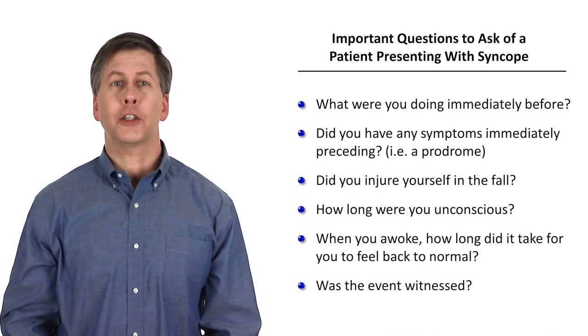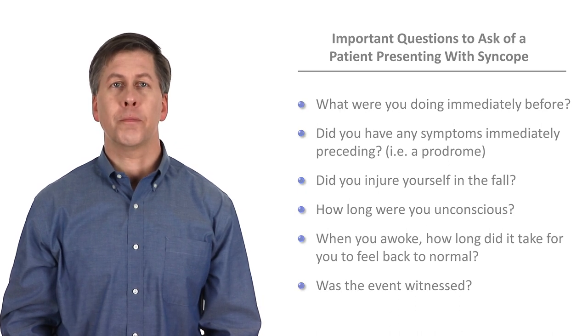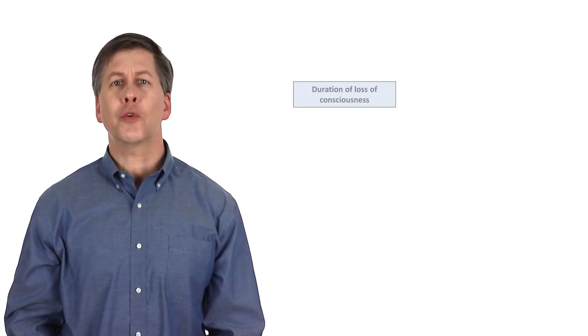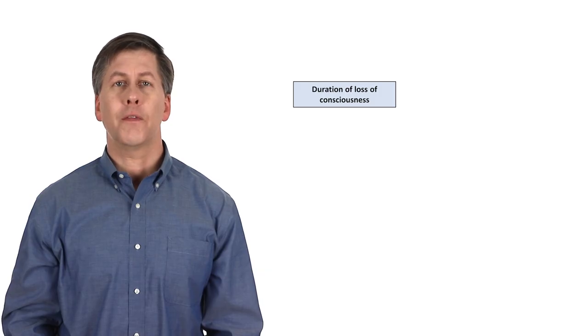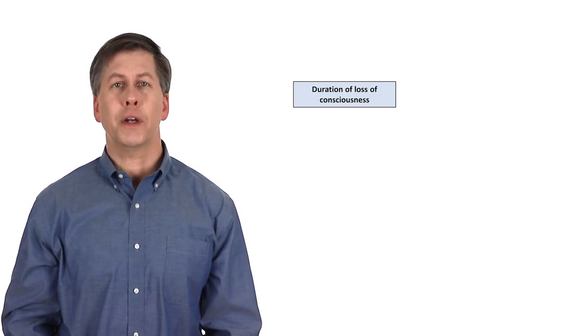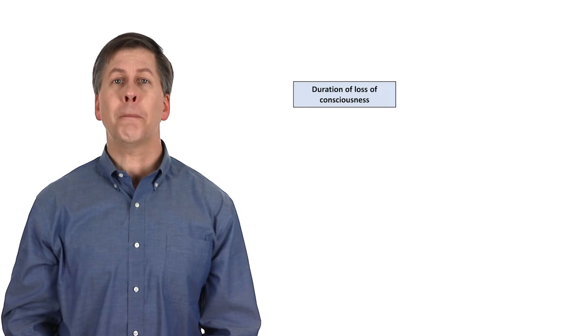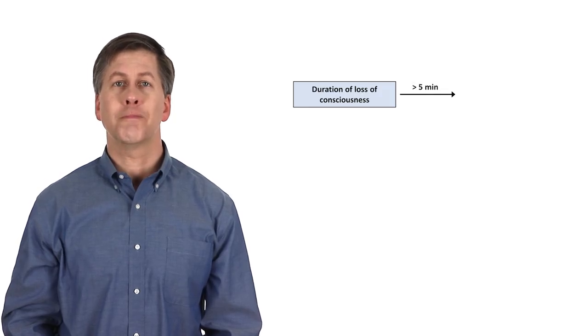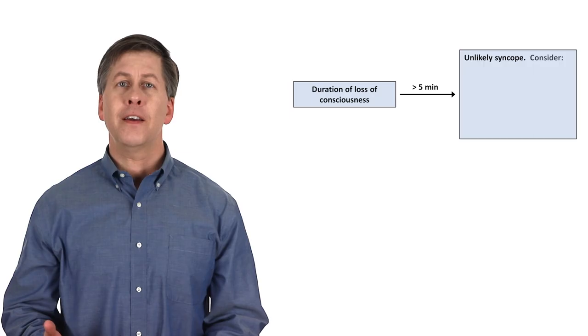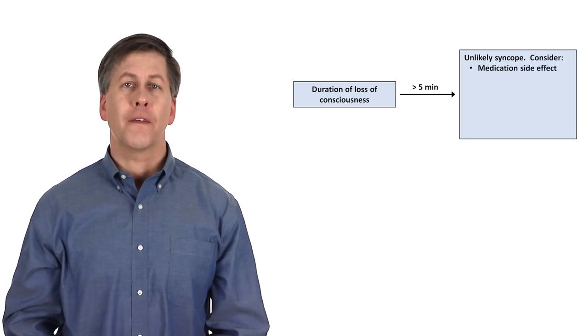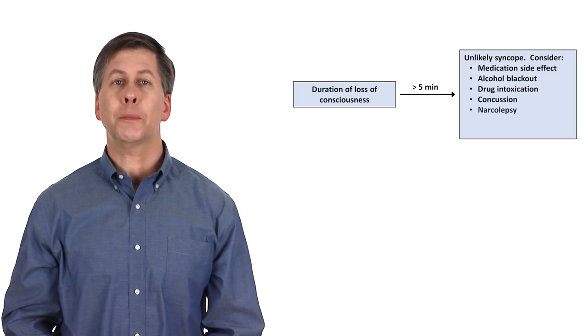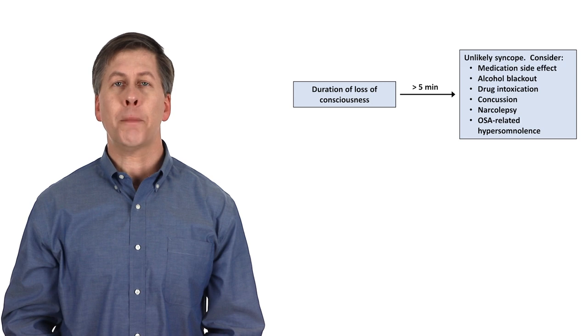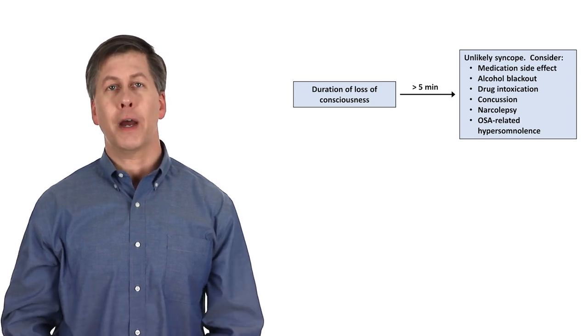We'll now incorporate this information into our diagnostic algorithm. The first step in the algorithm is to consider the duration of loss of consciousness. Loss of consciousness in syncope lasts for seconds to no more than about five minutes. If the person was completely unconscious for longer than this, it probably wasn't syncope. Instead, consider a medication side effect, alcohol blackout, drug intoxication, concussion, narcolepsy, or hypersomnolence related to obstructive sleep apnea, which on occasion really can be that dramatic.